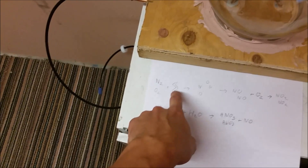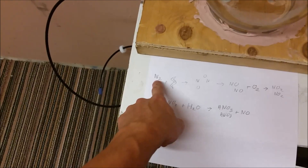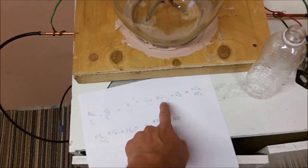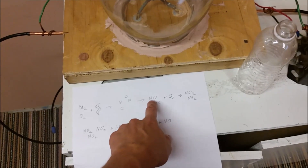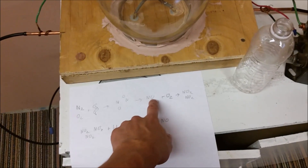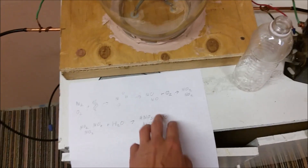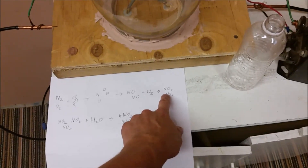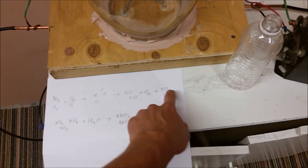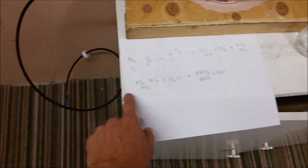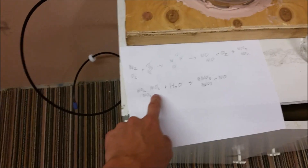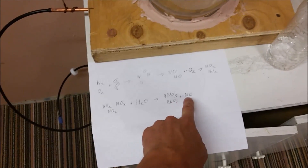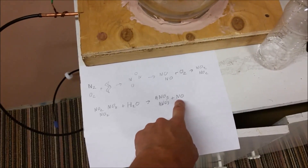Electricity, or an incredibly high temperature, breaks apart the oxygen and nitrogen atoms, which then can recombine forming nitrogen oxide molecules. Add another oxygen molecule to that, and you wind up with NO2, which is a brown gas. This NO2 can then combine with water, forming nitric acid and more nitrogen monoxide.